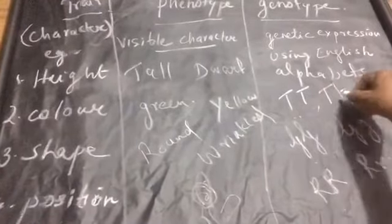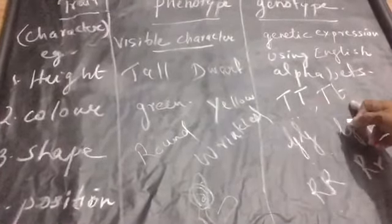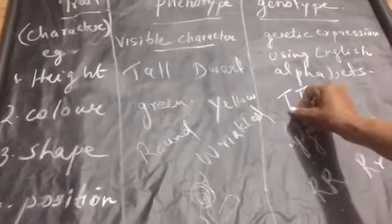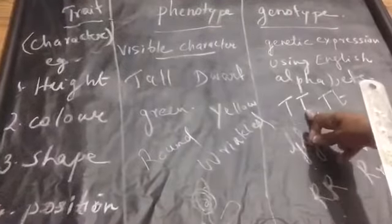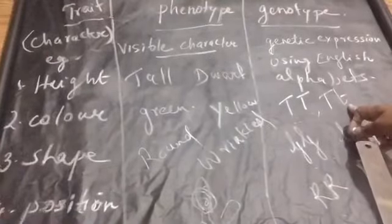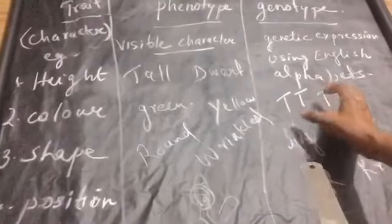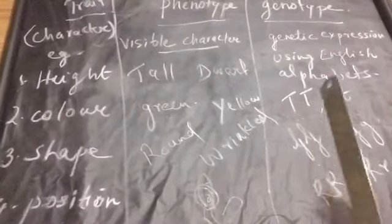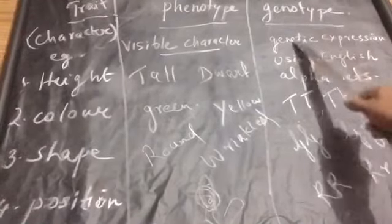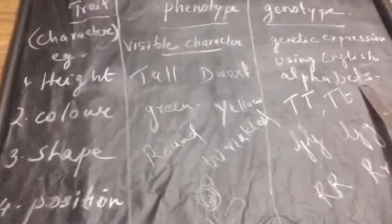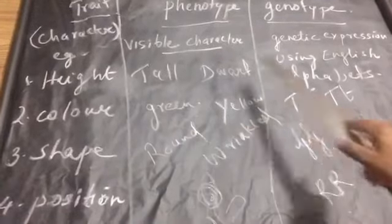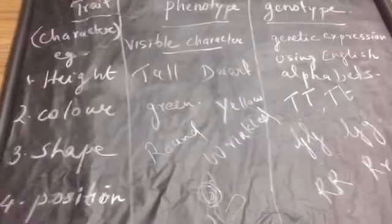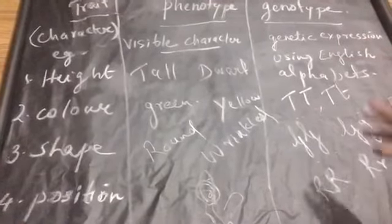Remember, everywhere for a character we are using a pair of factors. Now we use the term allele — capital T is one allele, small t is another allele. So either it can be both capital T or capital T and small t. We are going to discuss the meaning of this. For now, understand that genotype is the genetic expression using English alphabets — for phenotype tall, it can be capital T capital T, or capital T small t.